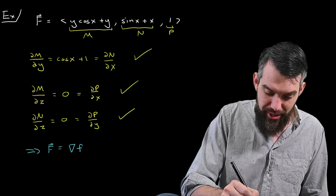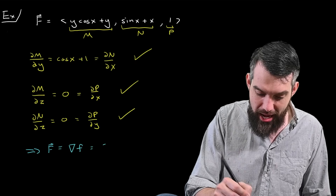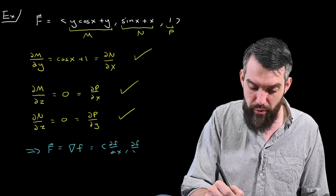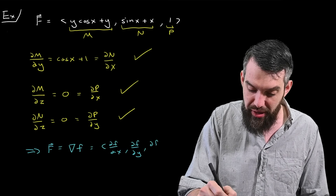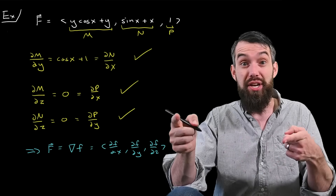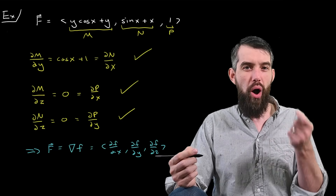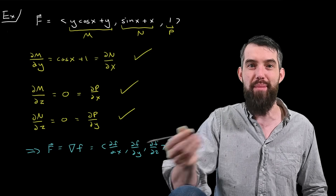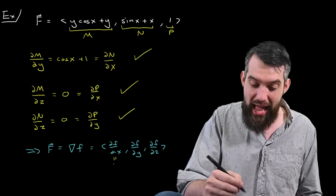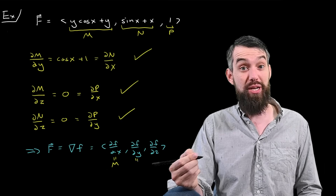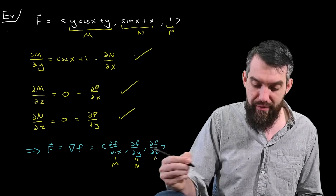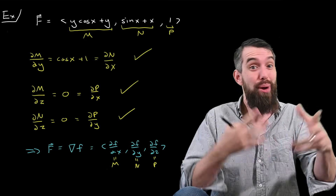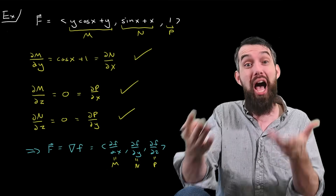The first step is to expand this gradient of f. The gradient of f can be written as the partial derivative of f with respect to x in the i-hat component, the partial derivative of f with respect to y in the j-hat, and the partial derivative of f with respect to z in the k-hat. That's just the definition of the gradient vector. So what this means is: ∂f/∂x = m, ∂f/∂y = n, and ∂f/∂z = p. This is the key hook I'll use to find f — effectively I've got three derivatives, and I'm going to do some integrals to work out what f is.